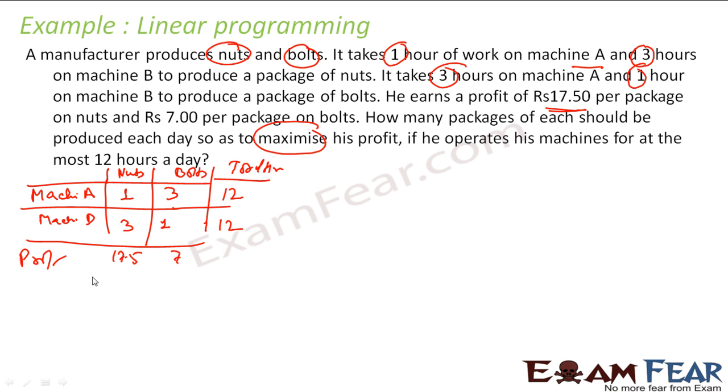Let me assume that this producer makes X nuts and Y bolts. In this case, what is the profit? Profit will be 17.5X plus 7Y, and this has to be maximized.